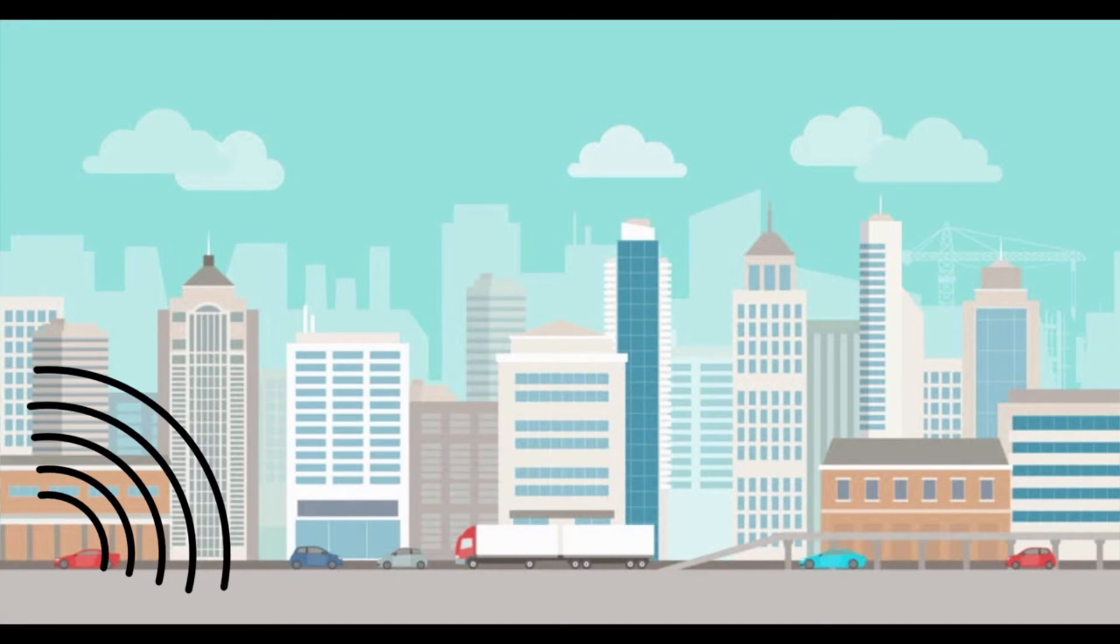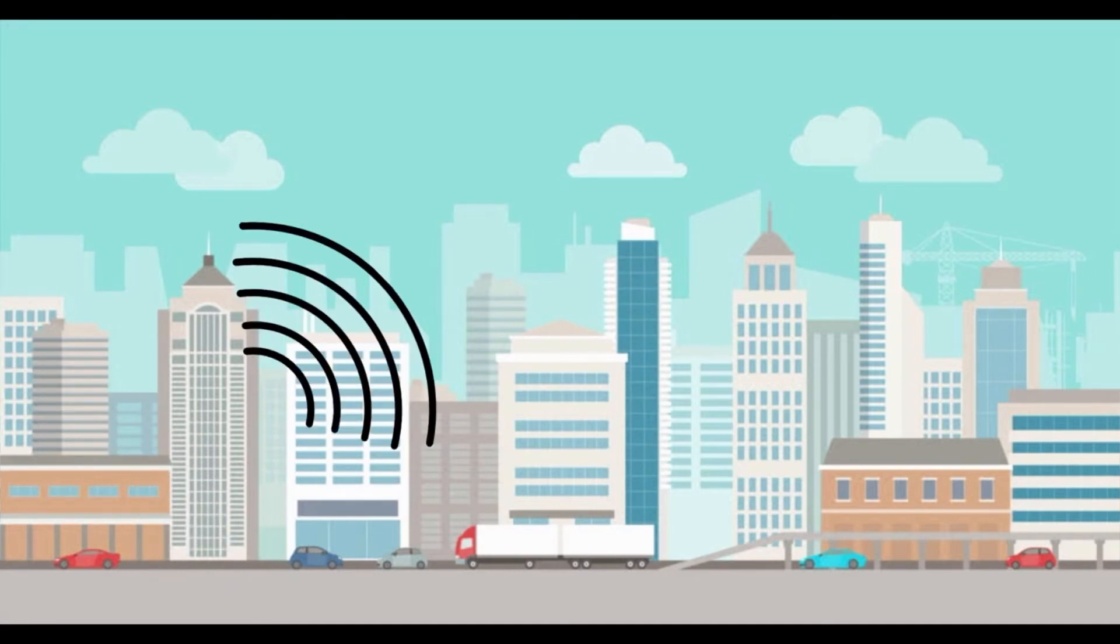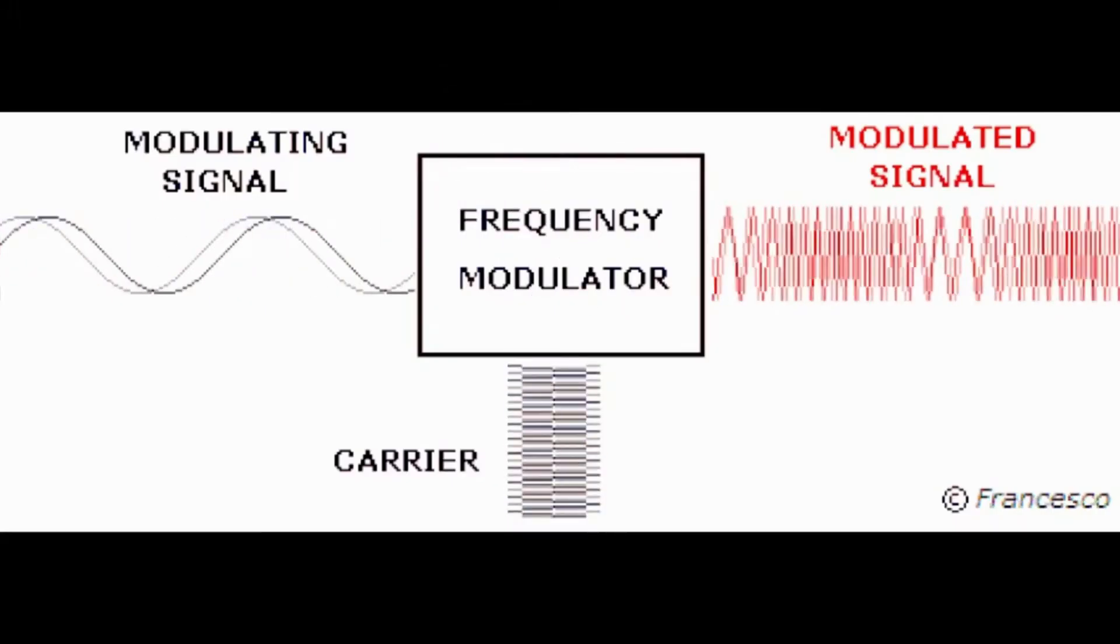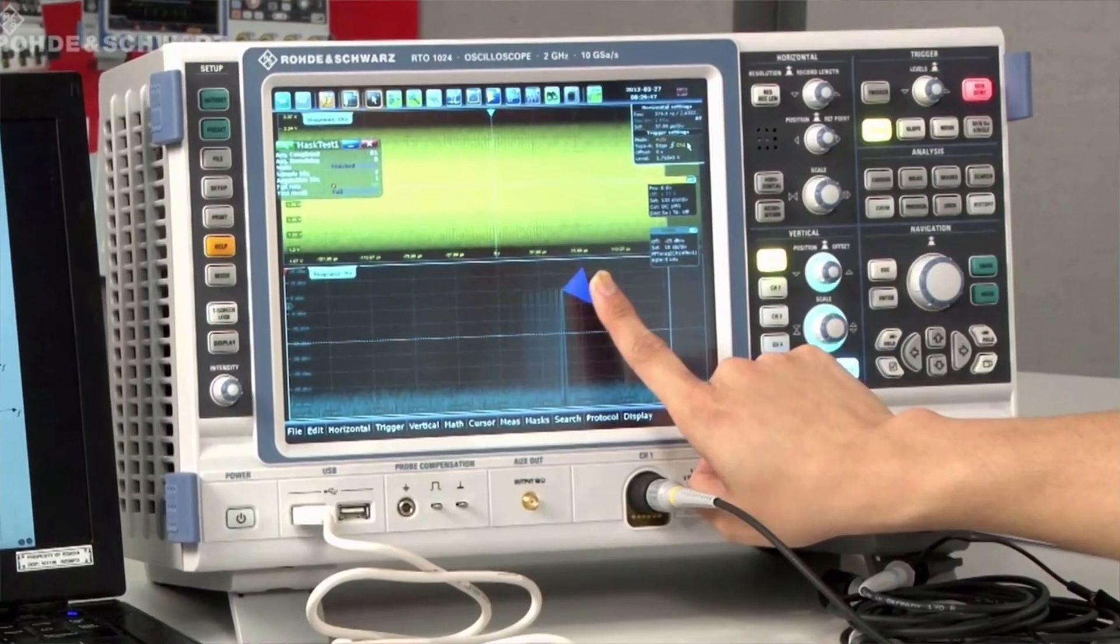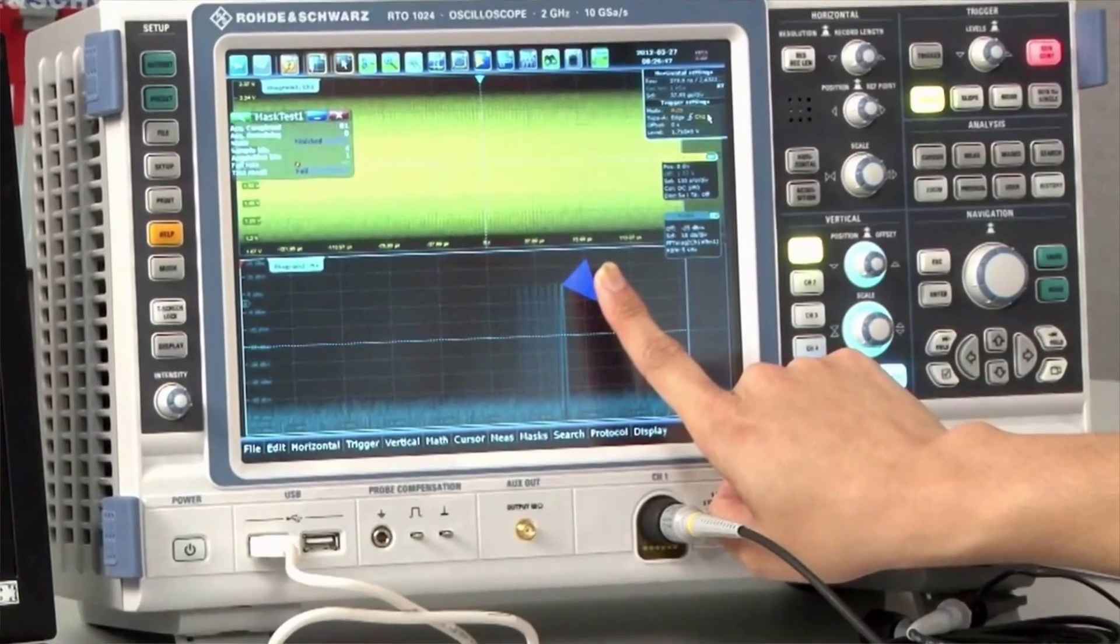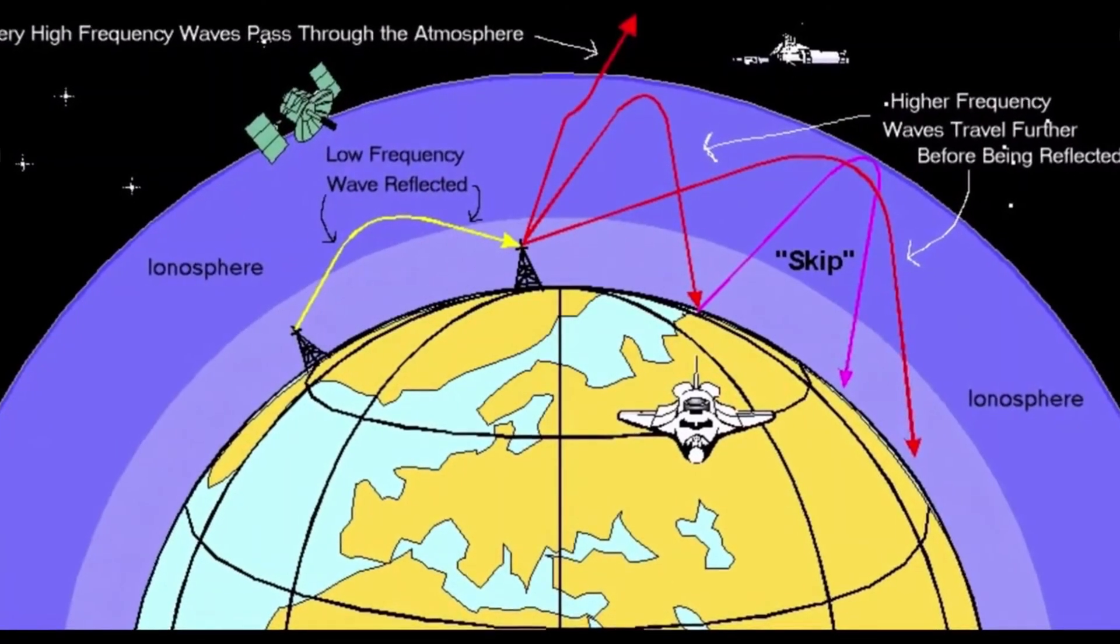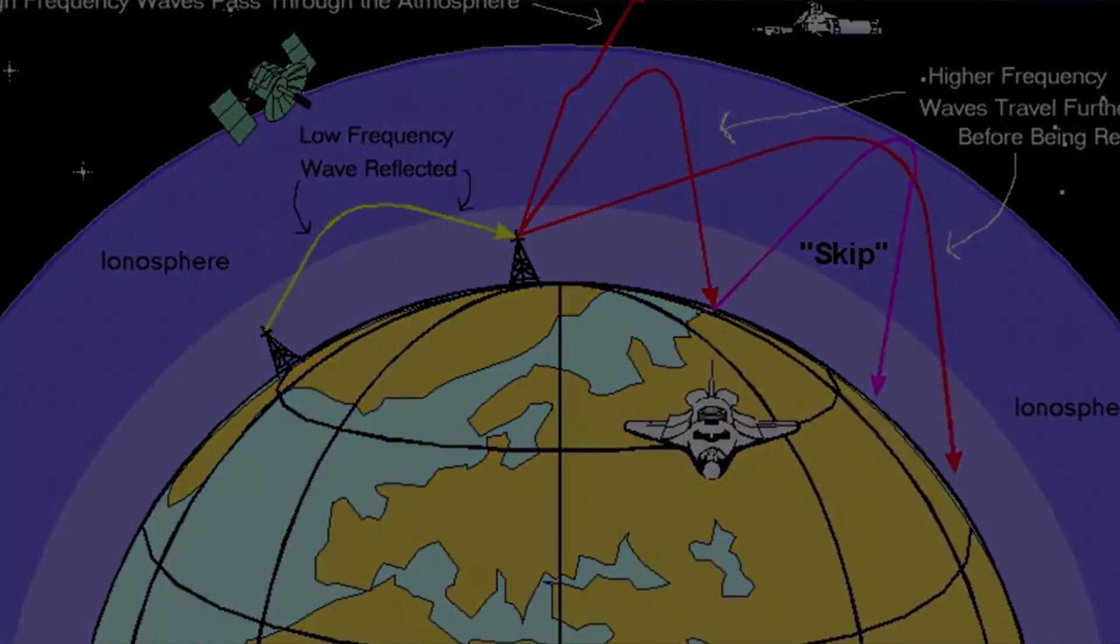Low frequency signals like audio or any other signals are incapable of propagating to long distance on their own. When modulating them with a high frequency carrier signal, the modulated output will obtain high frequency characteristics and as a result, it can propagate longer and in turn provides more range to the user.